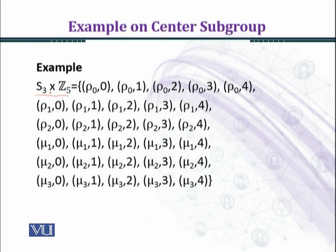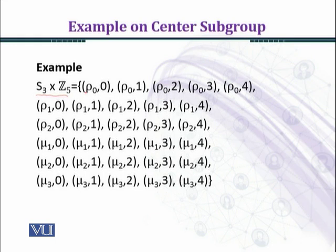We have a total of 6 × 5 = 30 elements in the group S3 × Z5. In Z5 we have five elements — 0, 1, 2, 3, 4 — which are the five residue classes under modulo 5. The first coordinate of each element belongs to S3 and the second coordinate belongs to Z5.